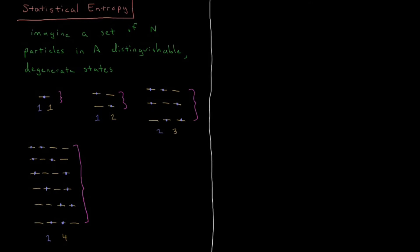Okay, so we had one way to arrange that in the first case, two ways to arrange it in the second, three in the third, and in our fourth case there were six distinct ways to arrange those particles among these degenerate states.